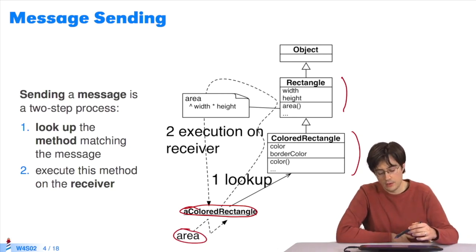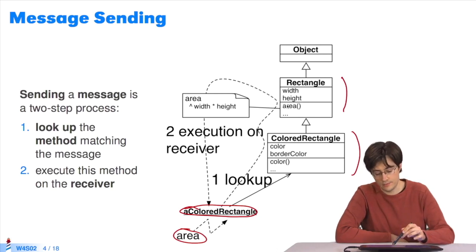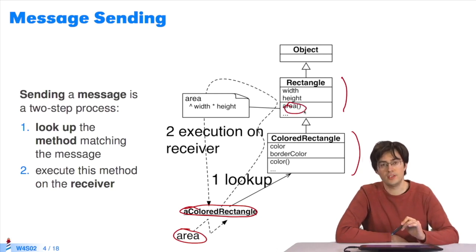Our lookup algorithm looks for a method matching the area message. It finds the method and carries it out in relation to the object acolored rectangle.